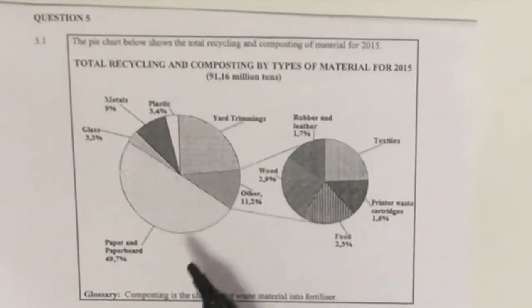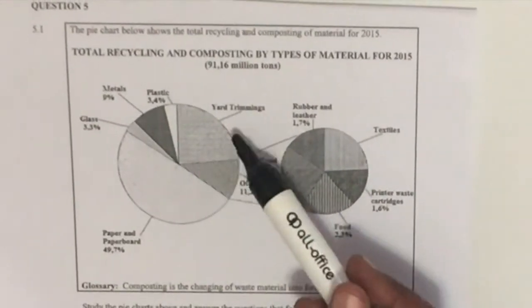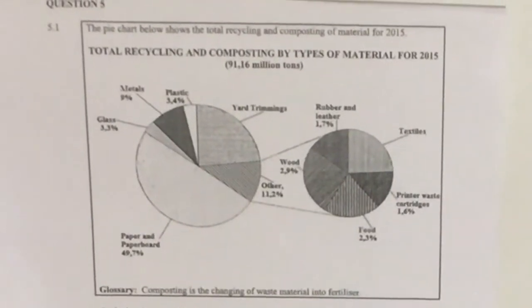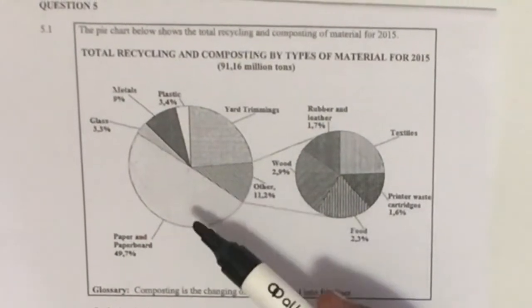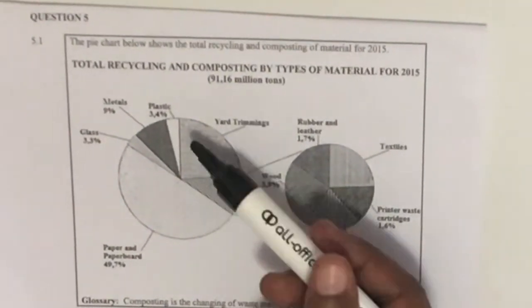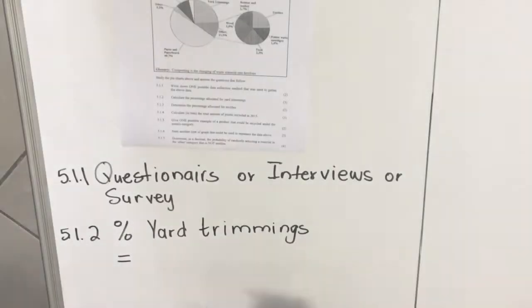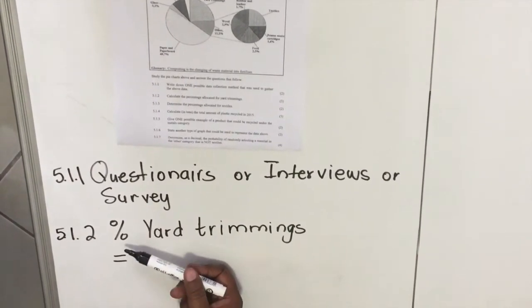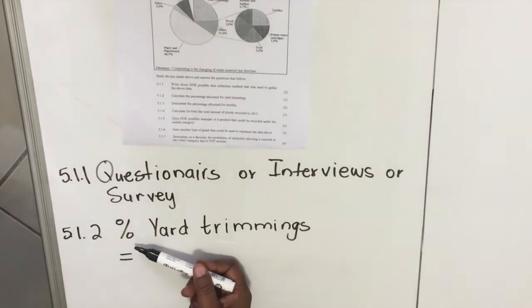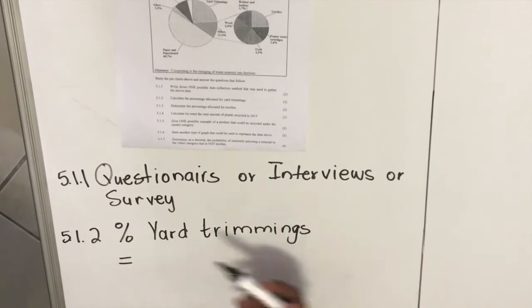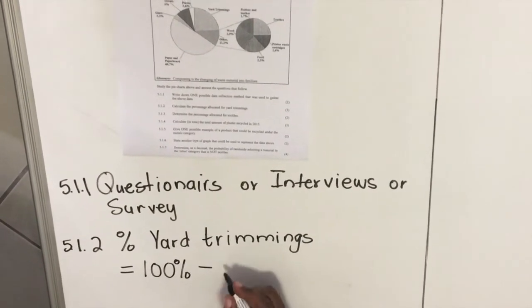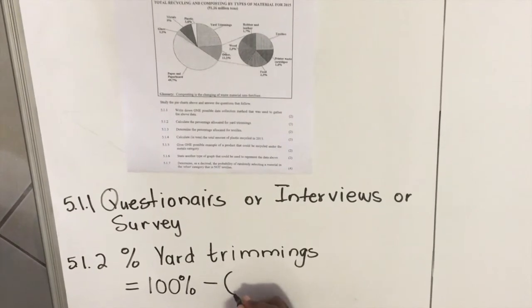Question 5.1.2: calculate the percentage allocated for yard trimming — and it's 3 marks. When you look at our chart, every portion has a percentage except for yard trimming. The whole chart is 100 percent, so if I subtract all the other percentages from 100 percent I'll get the remaining one. When you write your answers, tell the marker what you are writing. So: percentage for yard trimming equals 100% minus the sum of all the others.